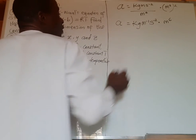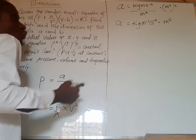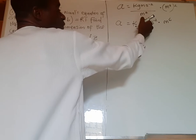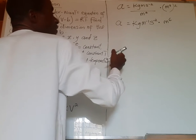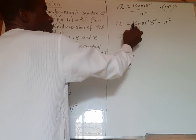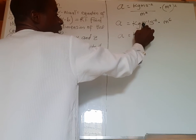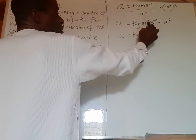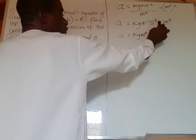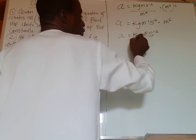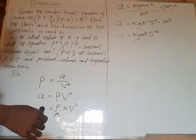When multiplying, from the law of indices we add the powers. Adding minus 1 plus 6 gives 5. So 'a' is equal to kg·m⁵·s⁻², and this is the unit of constant 'a'.